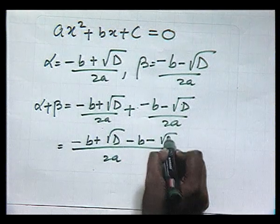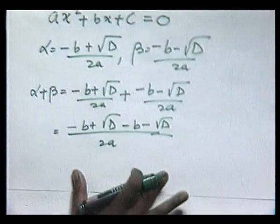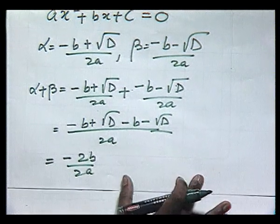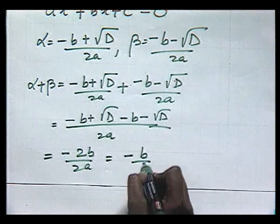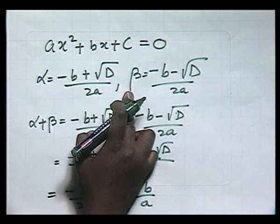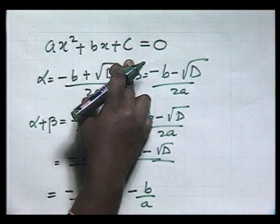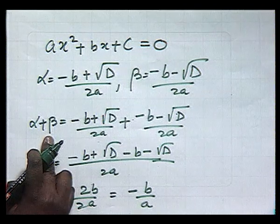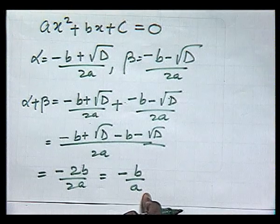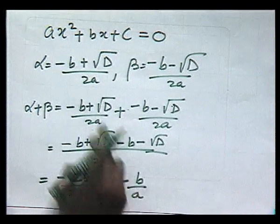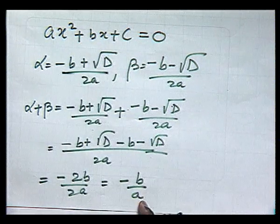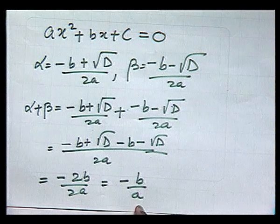This gives us minus b minus under root of d, which gives us minus 2b upon 2a, which is nothing but minus b upon a. Thus, we find that if alpha and beta are the roots of this quadratic equation, then the sum of its roots, that is alpha plus beta, is equal to minus b upon a, which is minus the coefficient of x, that is b, upon the coefficient of x squared, that is a.